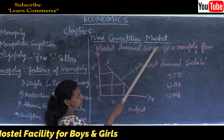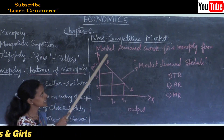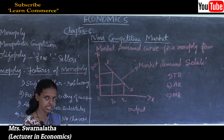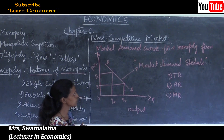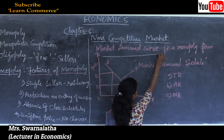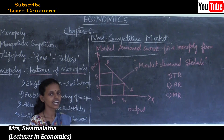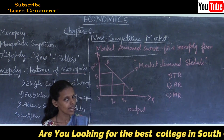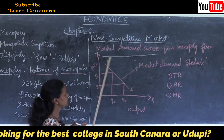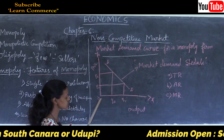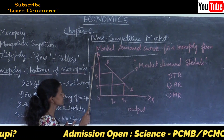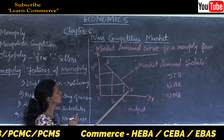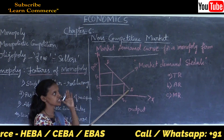Now we move to the market demand curve for the monopoly firm - how the market demand curve is derived. The market demand curve is the graphical representation of the market demand schedule. In this figure, the X-axis represents output and the Y-axis represents price. D is a downward sloping demand curve. The demand curve for a monopoly firm is downward sloping because the monopoly firm can sell more only when price decreases.